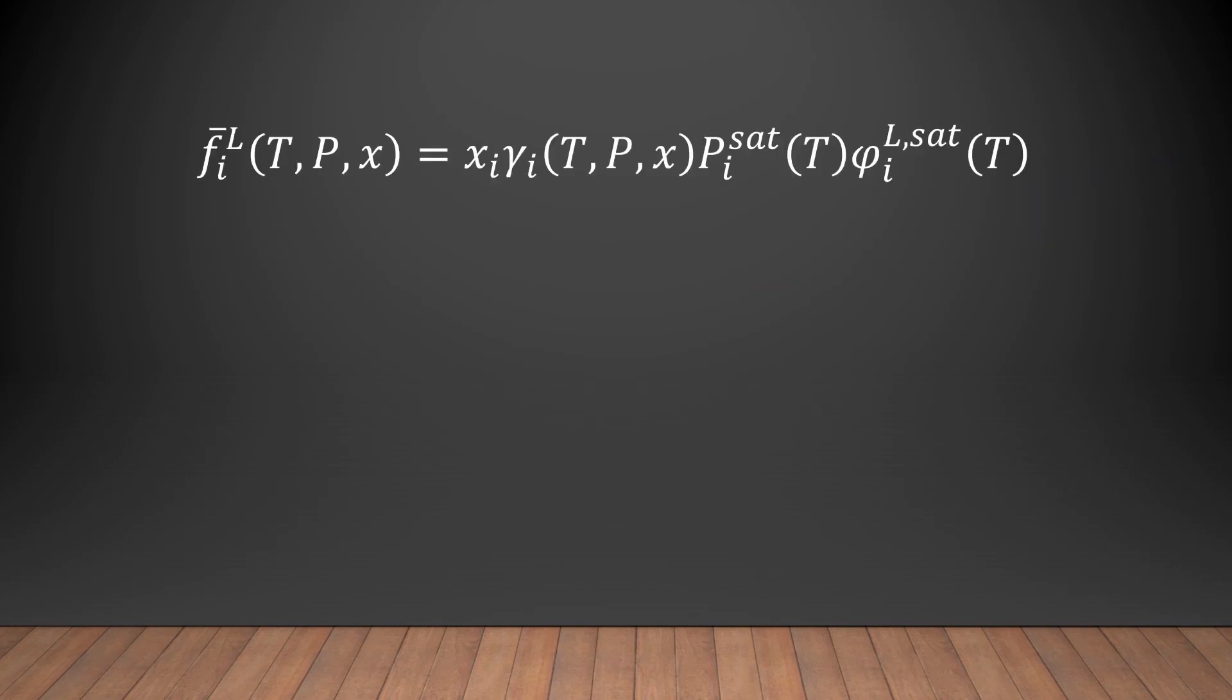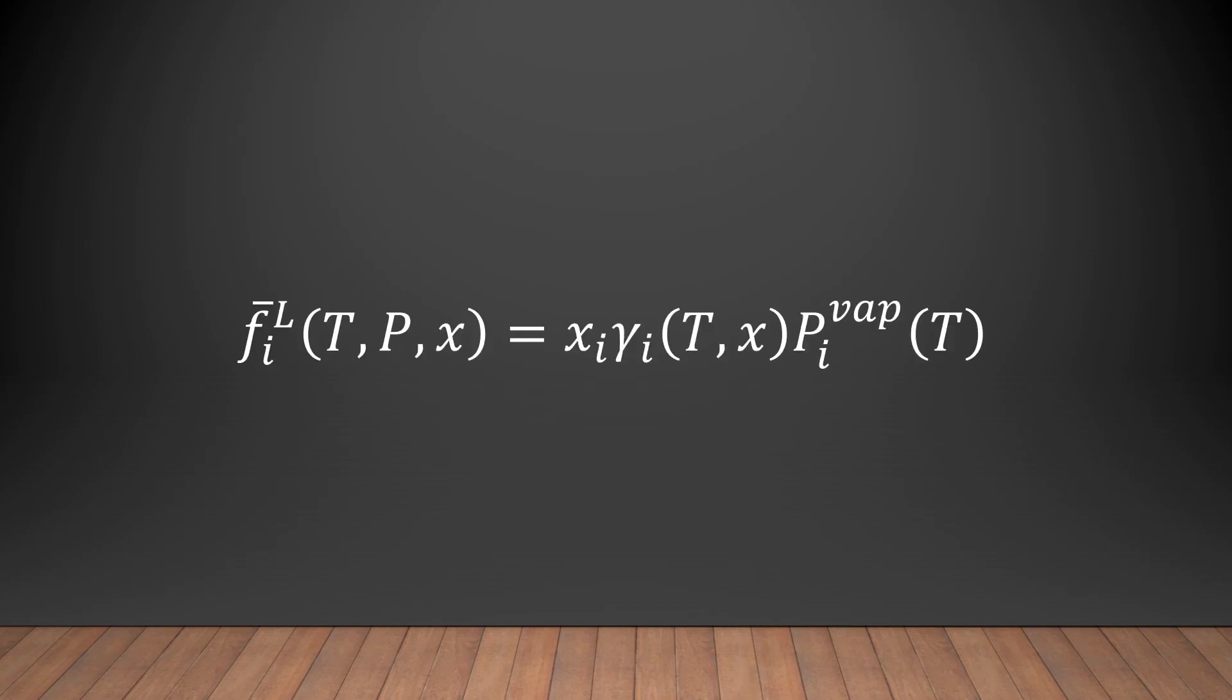The theorem of corresponding states dictates that compounds with equivalent reduced properties exhibit similar behavior. Those reduced properties can be seen here. The reduced properties are simply the actual property divided by the property at the critical point. In this experiment, the reduced properties of all compounds are the same, and the reduced pressures are low such that the compressibility factors go to 1. Because the compressibility factors are essentially 1, the fugacity coefficient of the liquid at saturation goes to 1. Here we look for the final working equation of the liquid phase mixture fugacity of component I, which equals the product of the liquid mole fraction of species I, activity coefficient of species I, and the vapor pressure of species I.